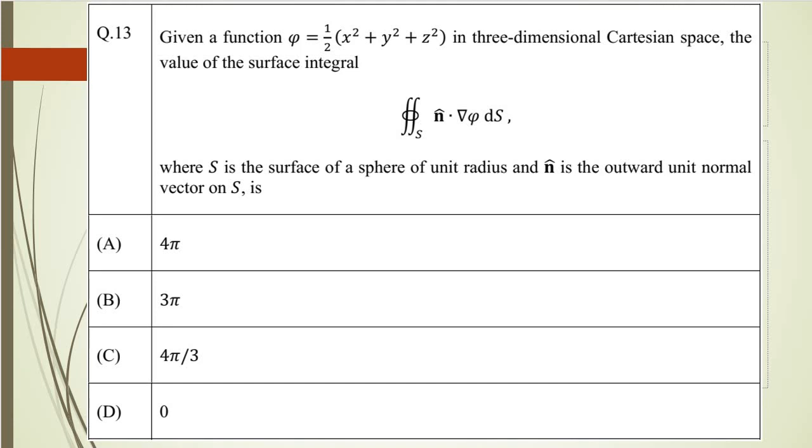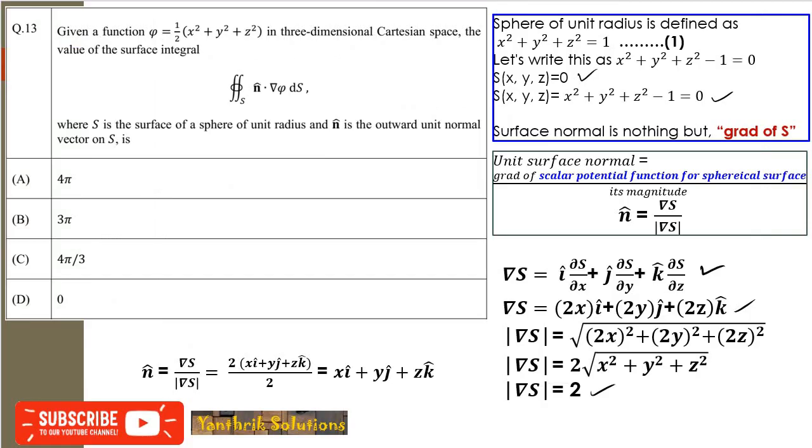We need to find the total surface integration over S. S is the sphere of unit radius, so mathematically it is defined as x² + y² + z² = 1. The surface function f(x,y,z) = 0 gives us x² + y² + z² - 1 = 0.